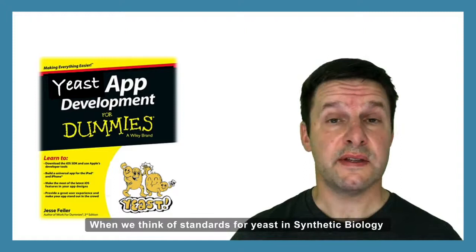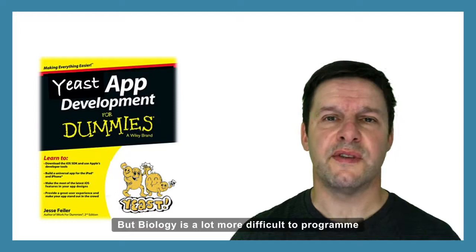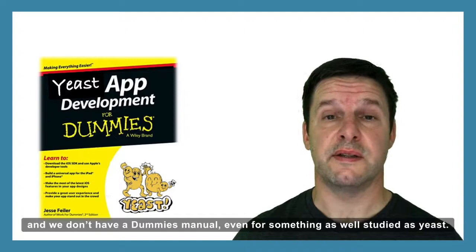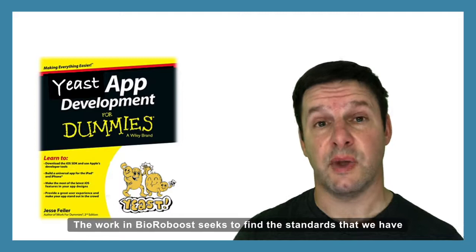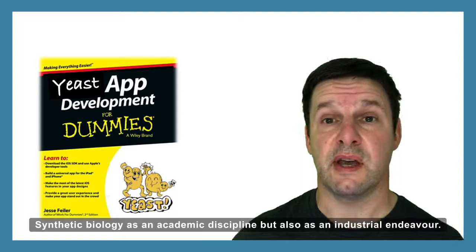When we think of standards for yeast synthetic biology, they exist to ensure that we can build our apps and that we can have them executed reliably within the yeast chassis. But biology is a lot more difficult to program, and we don't have that dummy's manual, even for something as well studied as yeast. The work of BioRobust seeks to define the standards that we have, but also define the ones that we don't have and would like, and which of those are the most important to deliver early to empower synthetic biology as an academic discipline, but also as an industrial endeavour.